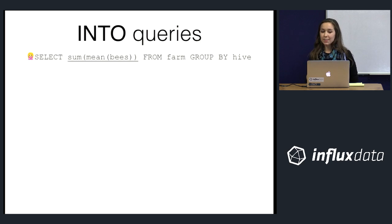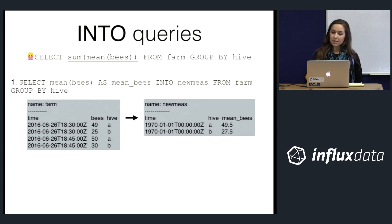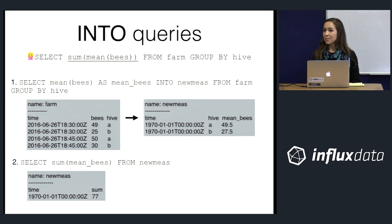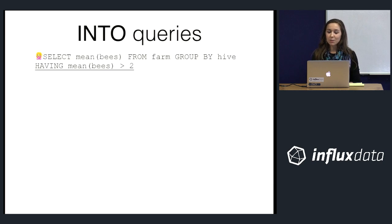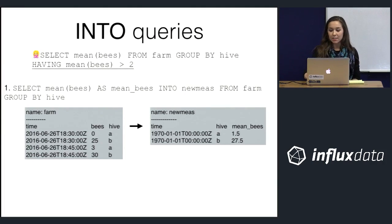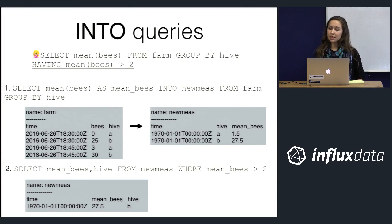To get the same results as those invalid queries using an INTO query, you break the query into two steps. The first step is the INTO query: calculate the mean value of 'bees' grouped by 'hive' and write the results into a measurement called 'new_meds'. The second query calculates the sum of the data you just wrote to 'new_meds'. The HAVING clause workaround is the same: the INTO query writes mean values to 'new_meds', then the second query retrieves only those values of mean_bees that are greater than two.